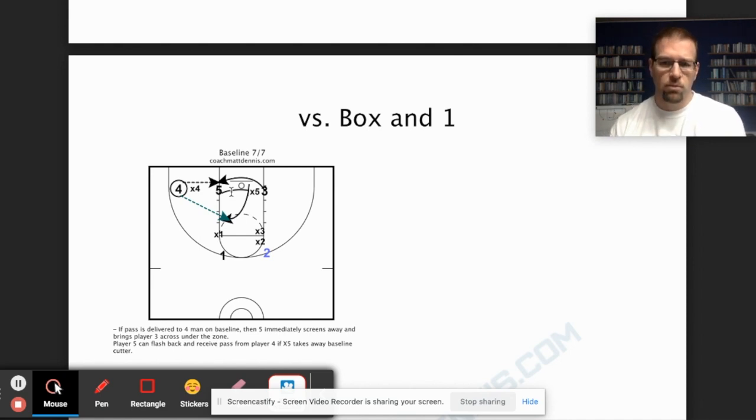So this is a way to utilize your two to set screens to get other people open. We saw a three-pointer for player three in the beginning. We saw maybe either a three-pointer for player four or three as another option. And then we've seen ways that we can get it into the post for a couple of post touches.